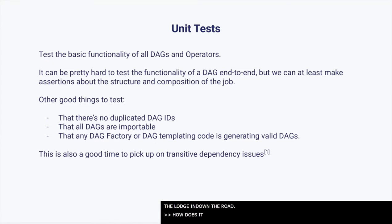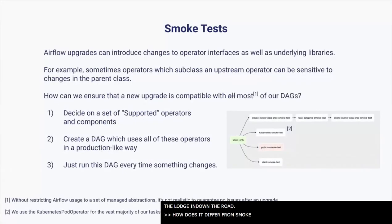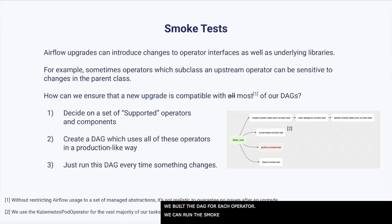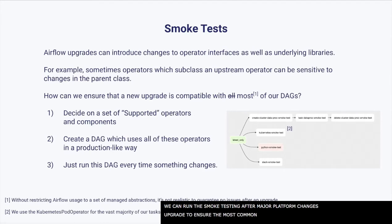Smoke testing in Airflow was introduced by the data infrastructure team. First, we decided on a list of supported operators that we commit to having working successfully at all times — this list contains Dataproc, Kubernetes, Python, and Slack operators. Then we built a DAG to run each of these operators. We can run the smoke testing DAG after major platform changes such as an Airflow upgrade to ensure that the most commonly used operators are working successfully before we roll those changes out to users.